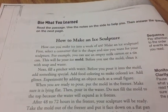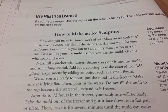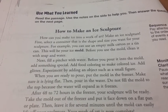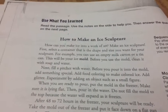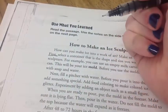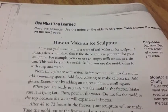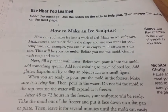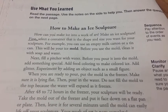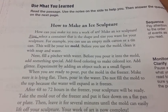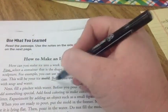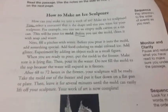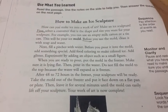How to make an ice sculpture. How can you make ice into a work of art? Make an ice sculpture. First, select a container that is the shape and size you want for your sculpture. I see a clue word — 'first' — so I'm going to underline that. That's an order word. For example, you can use an empty milk carton or a tin can. This would be your mold. Before you use the mold, clean it with soap and water. Here's another clue word — 'before' — I'm going to underline that. Please make sure you're underlining those clue words.